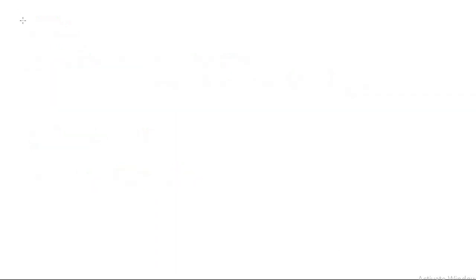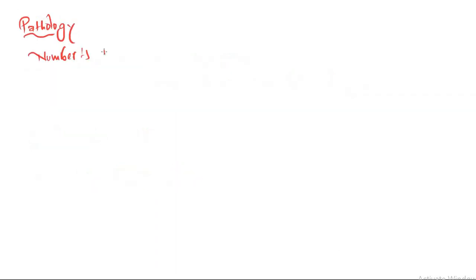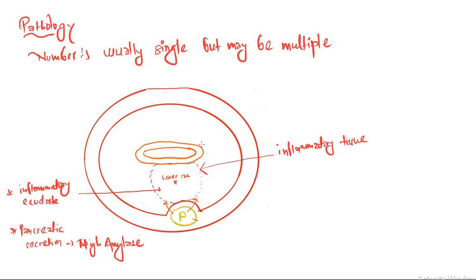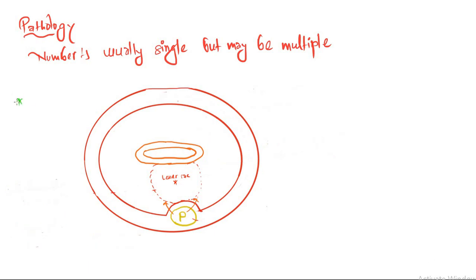Pathology: the number is usually single, but it may be multiple. Here we have the inflammatory exudate and pancreatic secretions, which are high in amylase, and this is the inflammatory tissue lining, which is why it is called pseudocyst. This is the stomach, so this lies between the stomach and the pancreas in the lesser sac.